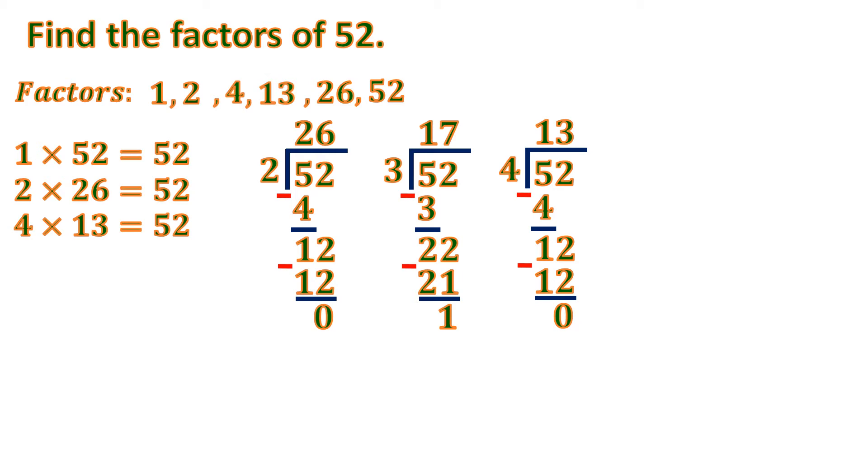So whenever we don't have enough space in between 4 and 13, if there is some other factors, then we can put on top just in case. So let's try some other factors. Let's have 5. So 52 divided by 5. We have 1. And then 1 times 5 is 5. Then subtract. So that's 0. Bring down 2. 2 divided by 5 is 0. 0 times 5 is 0. Subtract. So 5 is not a factor of 52.